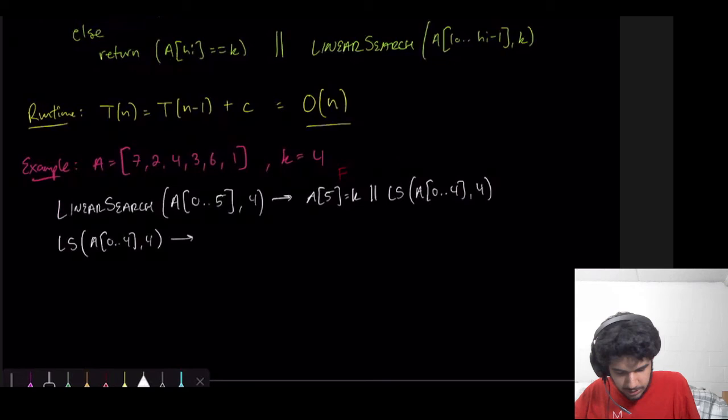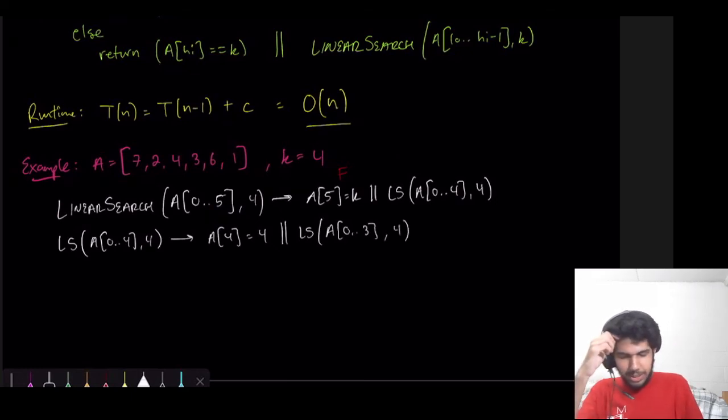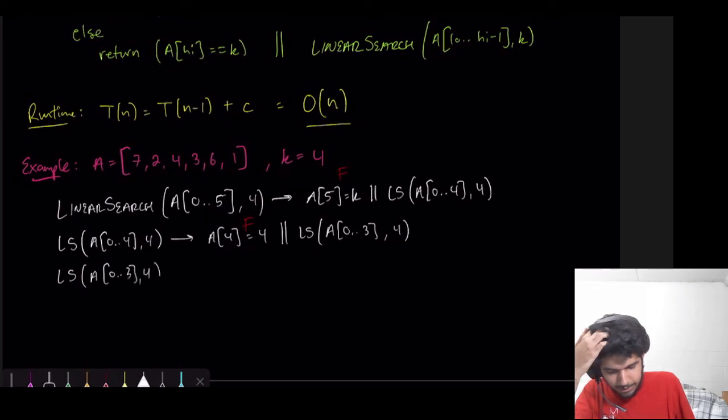So, this will return A of 4 equals 4, or linear search on the rest of it. So, we check, is A of 4 equal to 4? A of 4 is the sixth term. So, this is also false. So, now we have to evaluate this. And do the same thing again. A of 0 to 3, comma 4. That will, well, first we check, is low greater than high? It's not.